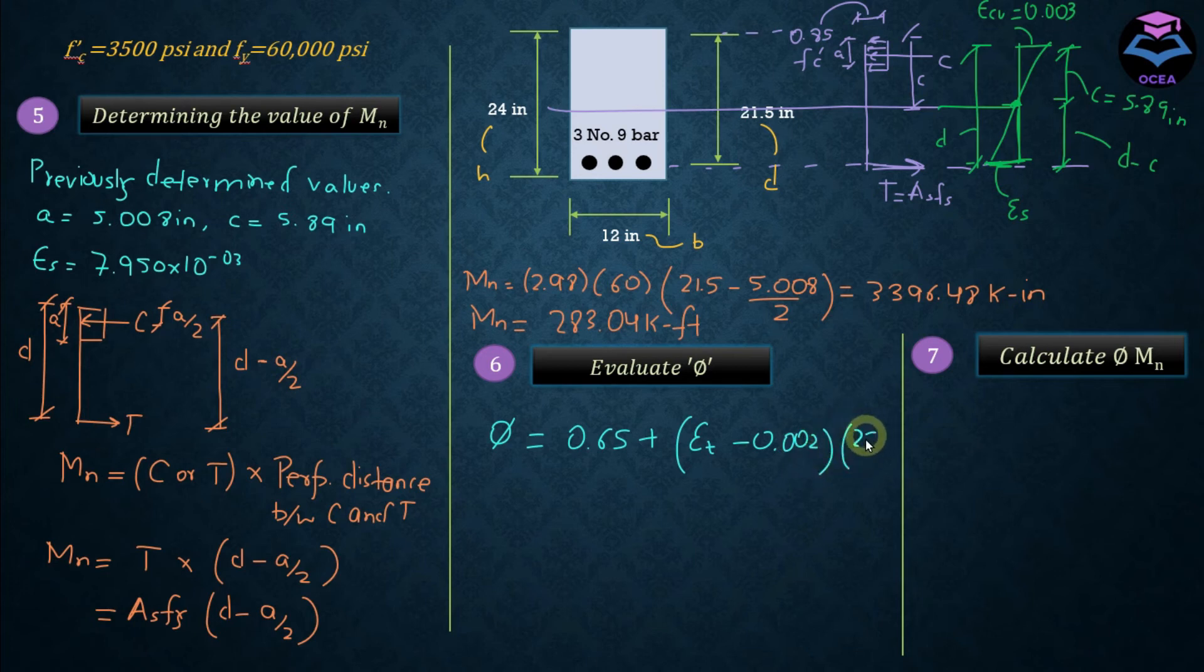And epsilon T is the net tensile strain, which is the strain in the extreme tension fiber at nominal strength. And this phi, the strength reduction factor, should be less than or equal to 0.9. And since there exists only one layer of steel in the tension zone, then in this case epsilon s is equal to epsilon T.